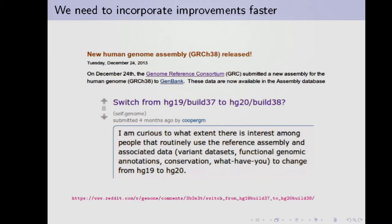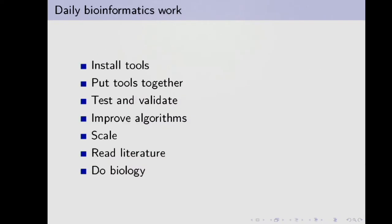The question is: how can we work faster and do more science faster? As a community, we are slow to move. My example is build 38 — two Christmases ago, December 24th, the genome build 38 was released. It's been a couple of years, and this is from Reddit just a few months ago: 'Hey, anyone using 38? Should we start using this new genome?' It's an improved, better genome with seven years of work put into it, and it's been two years and the community is very slow to switch.